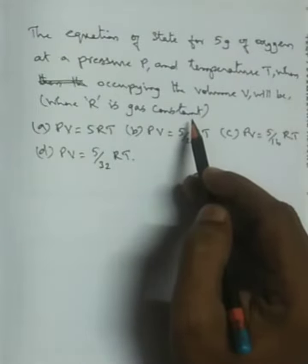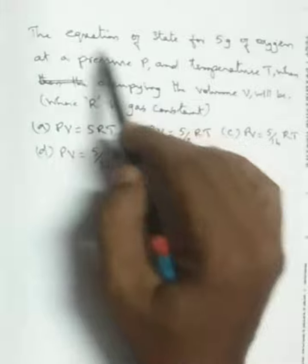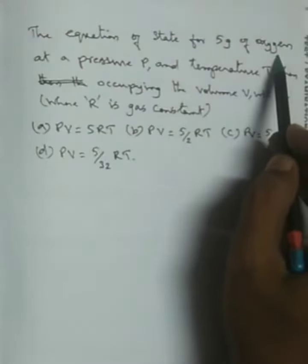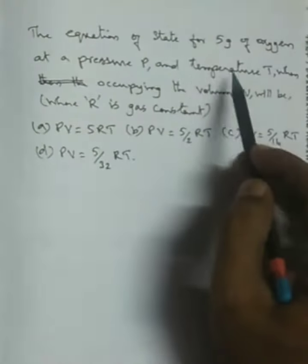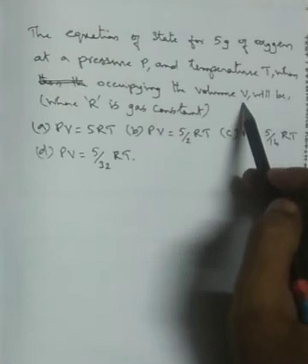What is the equation of state? What is the equation for 5 grams of oxygen at pressure P, temperature T and volume V?